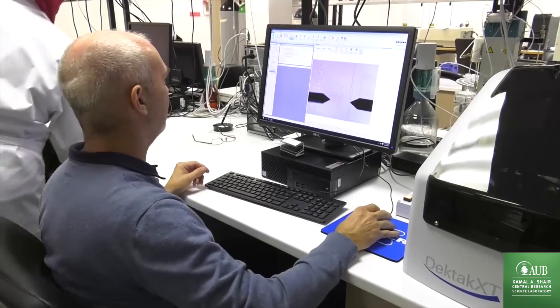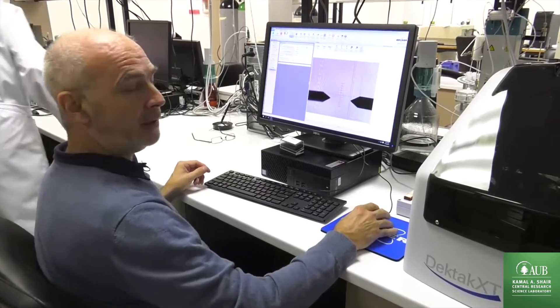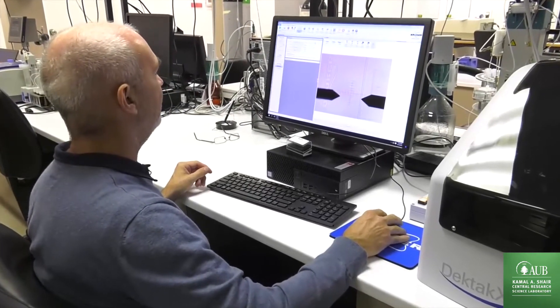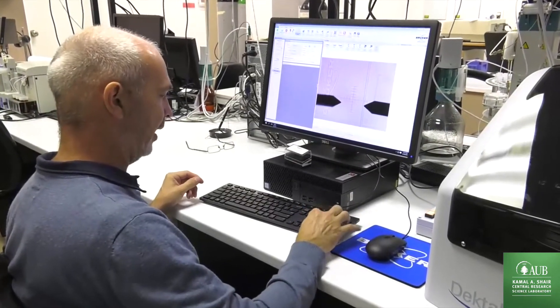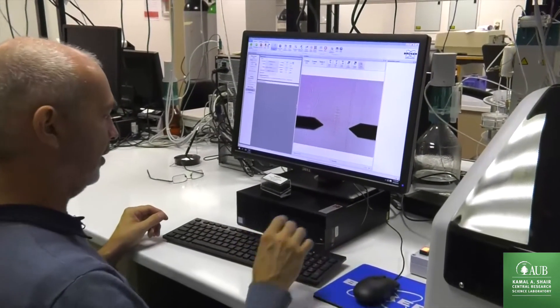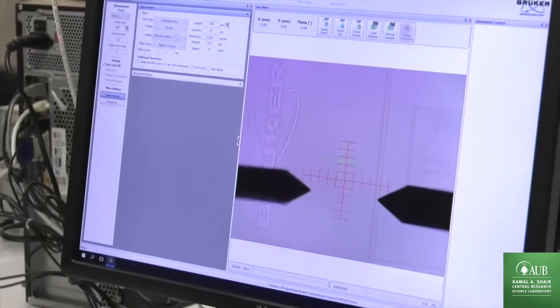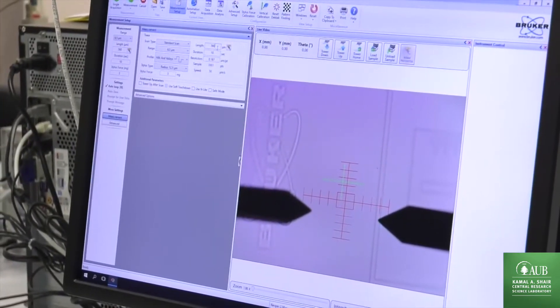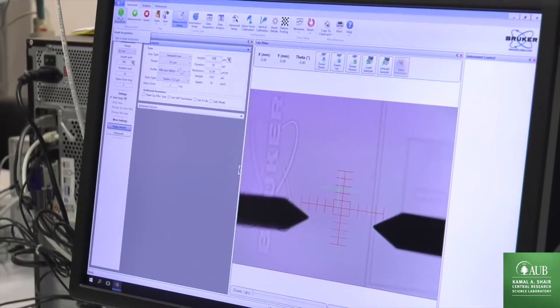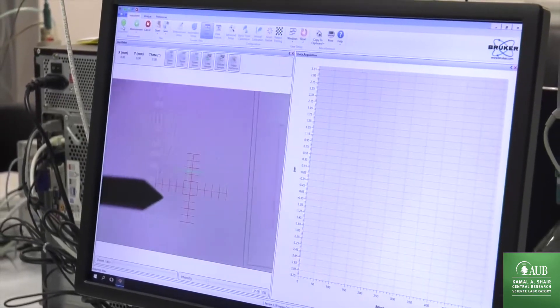So to measure the roughness, we again select the smallest scan range. And we select a scan length. Now anticipating that the roughness will be very low, I set it to 560 micrometer and take a measurement.